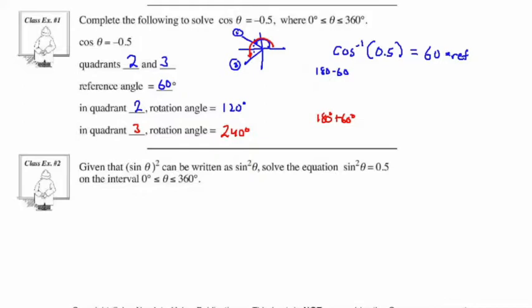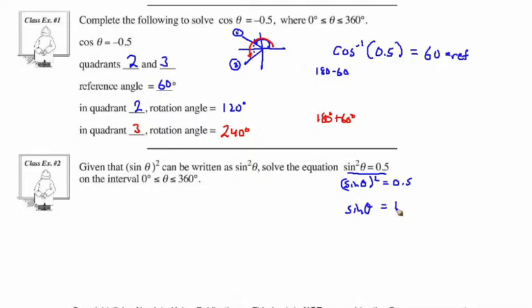Taking a look at class example number 2, we're given sin²θ = 0.5. Since sine squared theta is equivalent to (sin θ)², we can say (sin θ)² = 0.5. Taking the square root of both sides, sine θ can be equal to plus or minus the square root of 0.5. So we have two cases: case one where sin θ = +√0.5, and case two where sin θ = -√0.5.